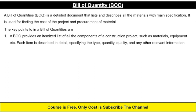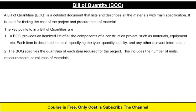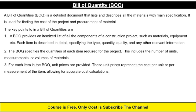A BOQ provides an itemized list of all the components of a construction project, such as materials, equipment, etc. Each item is described in detail, specifying the type, quantity, quality, and other relevant information. The BOQ specifies the quantities of each item required for the project, including the number of units, measurements, or volumes of materials. For each item in a BOQ, unit prices are provided, representing the cost per unit or per measurement, allowing for accurate cost calculation.